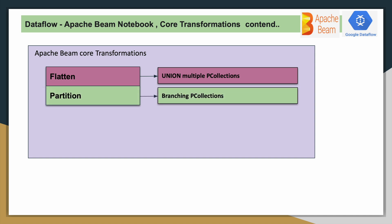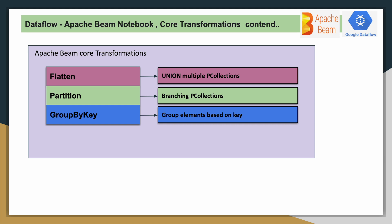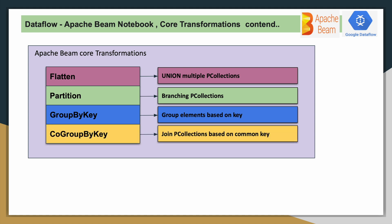The next thing is Partition, which is essentially branching. If there is a P collection and you have to produce multiple P collections from a single P collection based on some logic, this is called branching. Then GroupByKey: if data is available and you have to group it based on some column, that column becomes your key and you use GroupByKey.